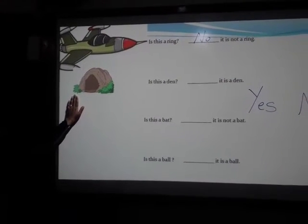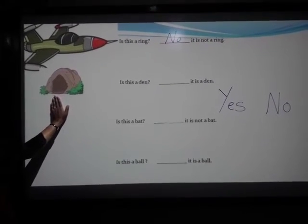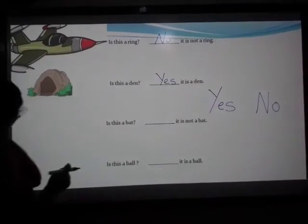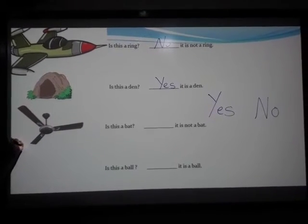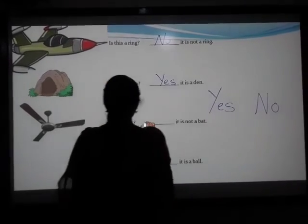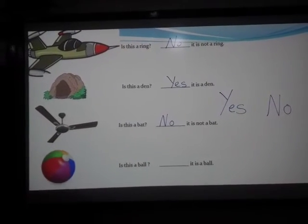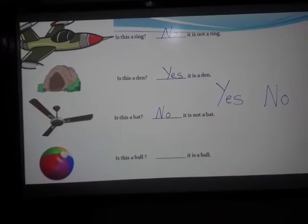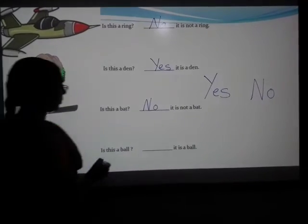Now, here we have learned this word in N-words. Is this a den? Yes, it is a den. Next is, we are using this also when we are feeling hot. Is this a bat? No, it is not a bat. This is also used by you. What is this? Is this a ball? Yes, it is a ball.